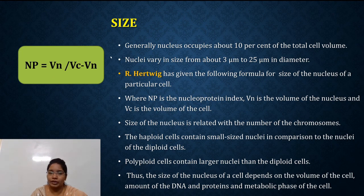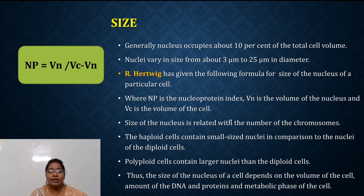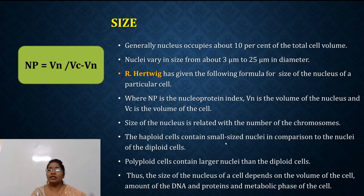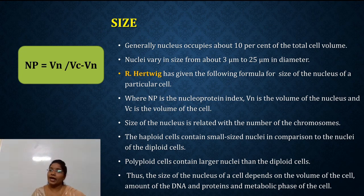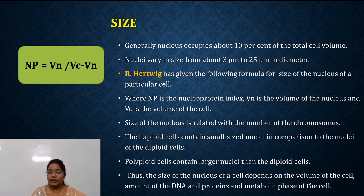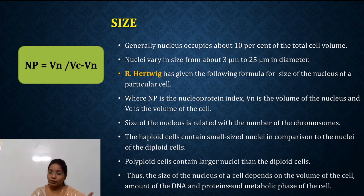The size of nucleus is related with the number of chromosomes. Haploid cells contain small-sized nuclei compared to diploid cells. Similarly, polyploid cells contain larger nuclei than diploid cells. The concluding remark is: the size of nucleus depends on volume of the cell, amount of DNA and protein, and the metabolic phase of the cell.